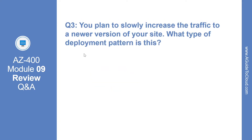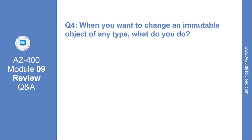Question number three: you plan to slowly increase the traffic to a newer version of your site — what type of deployment pattern is this? The correct answer is blue-green.